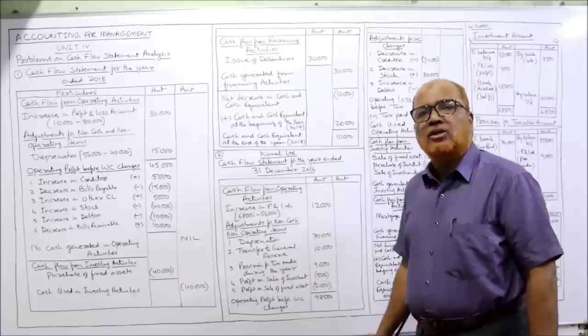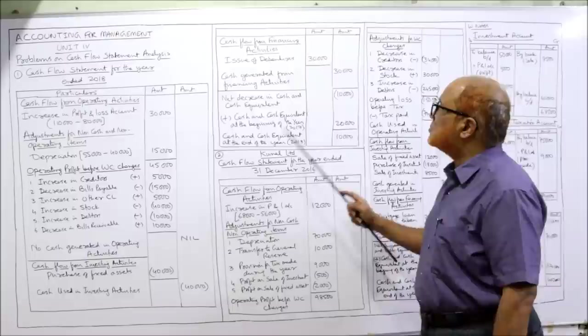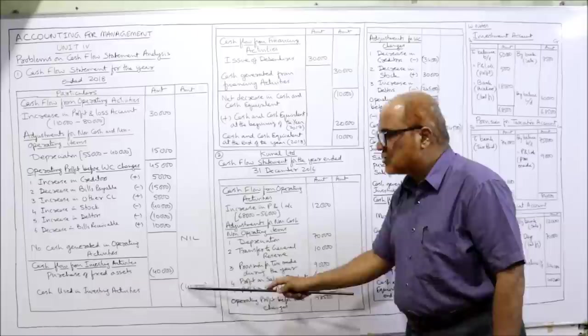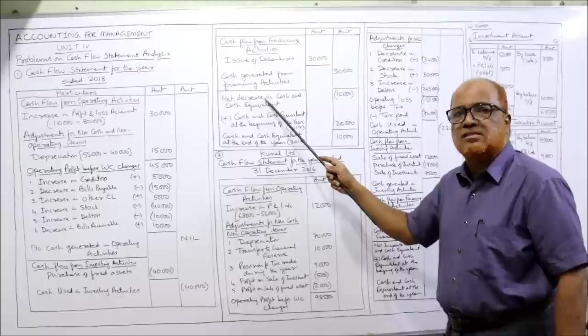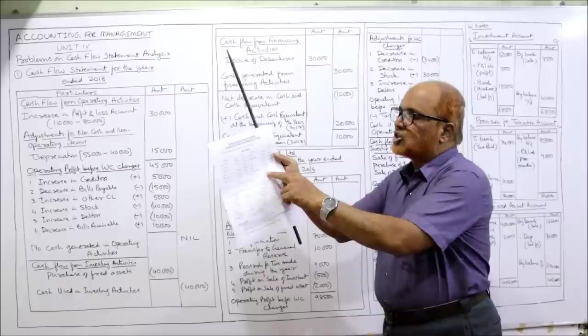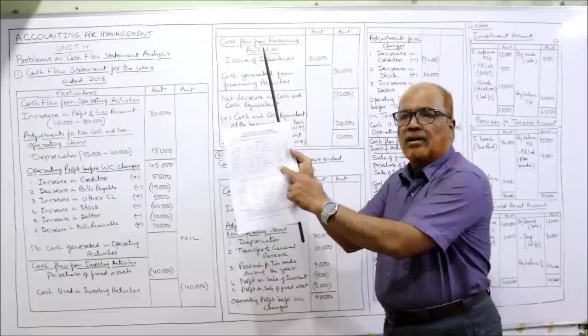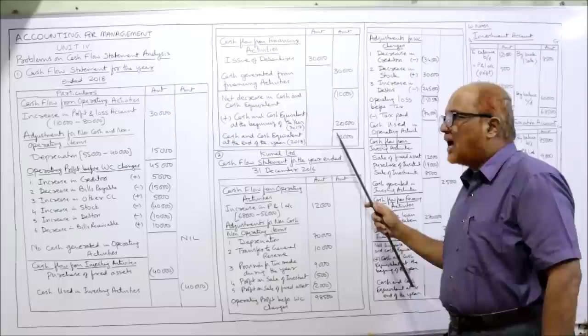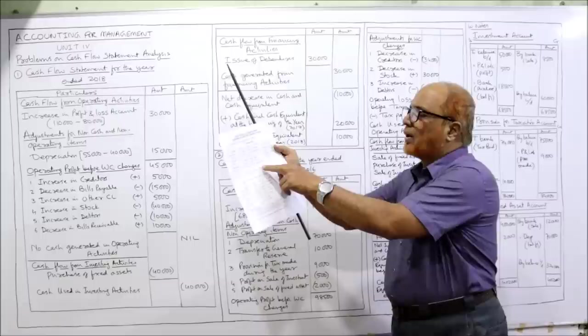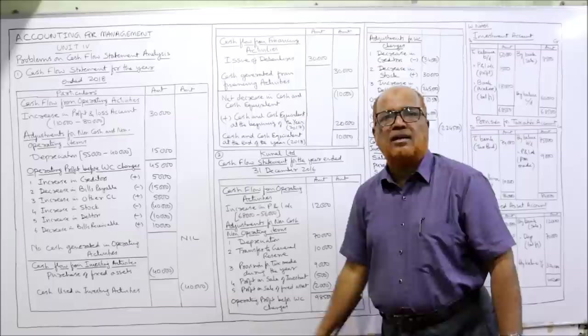Now take the total in the outer column: 0 minus 40,000 plus 30,000 equals minus 10,000. This is the net decrease in cash and cash equivalent. Last year's cash balance from the balance sheet is 20,000. So 20,000 minus 10,000 equals 10,000 — this is the cash and cash equivalent at the end of the year. Compare it with the problem: current year cash is 10,000, and we also got 10,000. Our cash flow statement is correctly prepared.